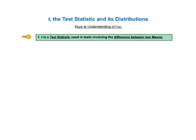For this video, there are five KTUs. The first key to understanding tells us that T is a test statistic used in tests involving the difference between two means.